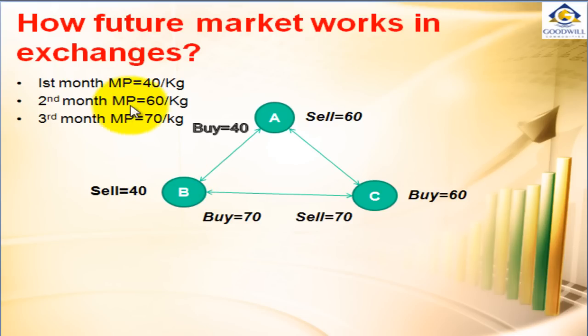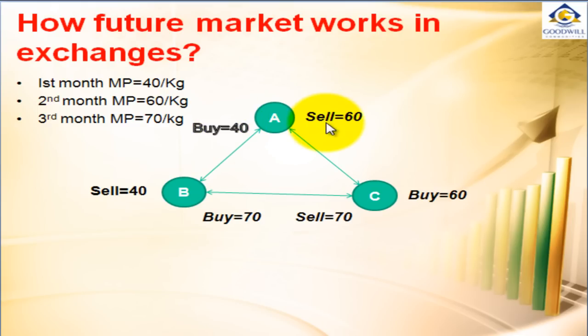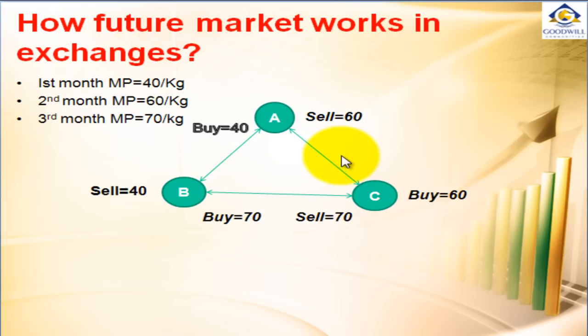In the second month, the market price was around Rs 60 per kg. Trader A thinks it is a very good price, so he wants to book his profit by selling what he had bought earlier to some other person. At that time, C was very much interested — he thinks the price of rice can still move up. So C purchased the same quantity from A at the market price of Rs 60 per kg.